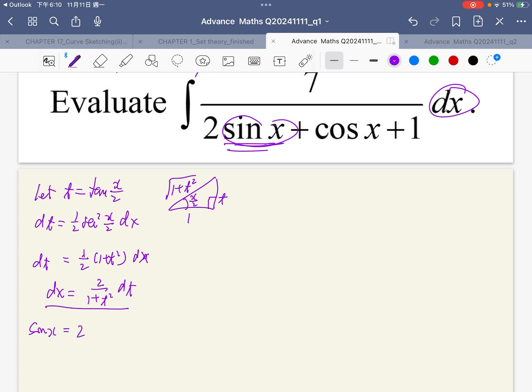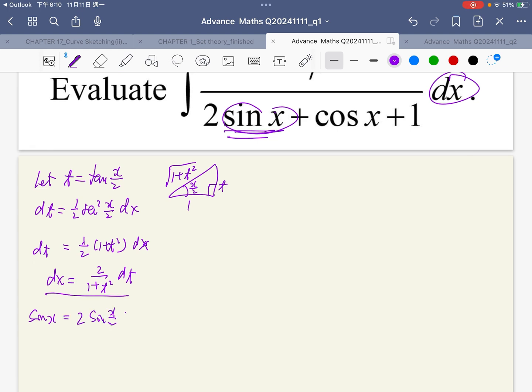sin x equals 2 sin x over 2 cos x over 2. This is 2 times t over square root of 1 plus t squared, times 1 over square root of 1 plus t squared.